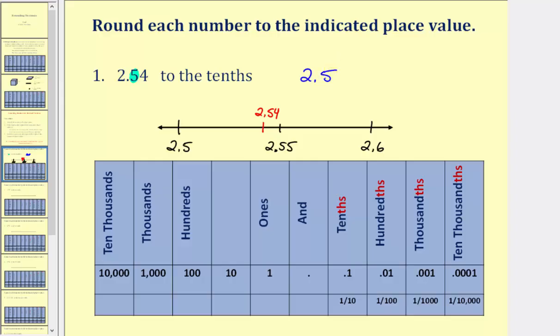So by rounding, what we're doing is determining whether a given number is closer to one of two numbers based upon a given place value. Let's look at another example.